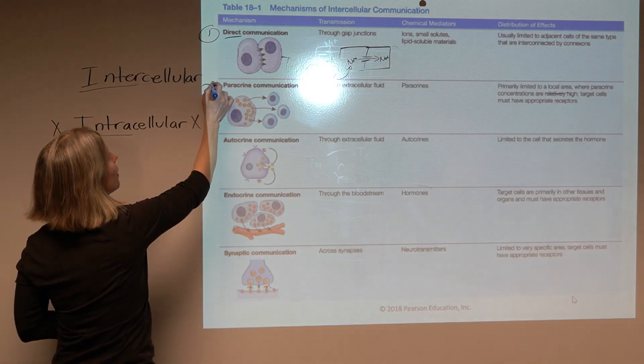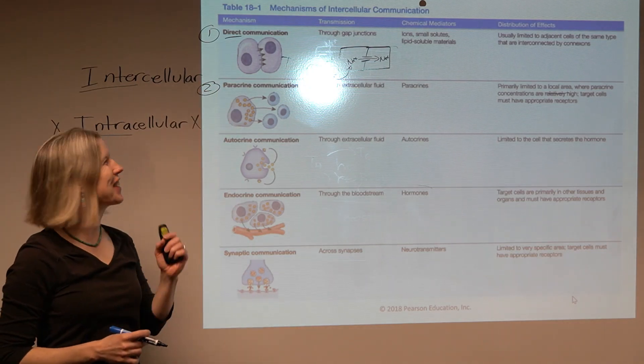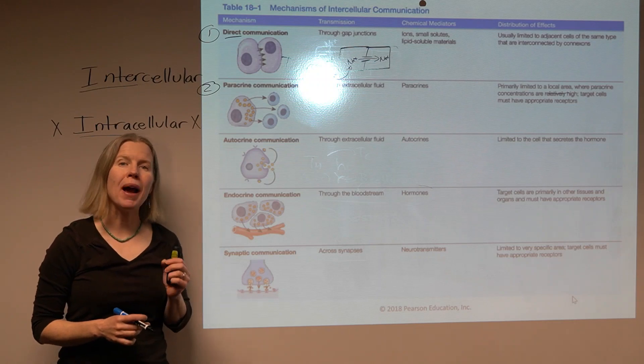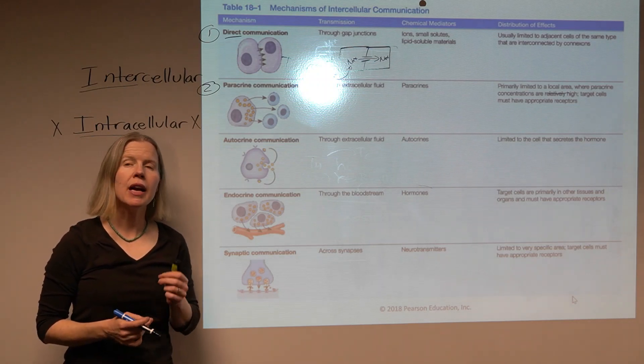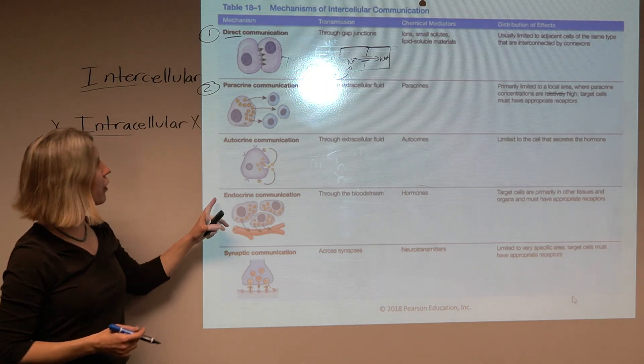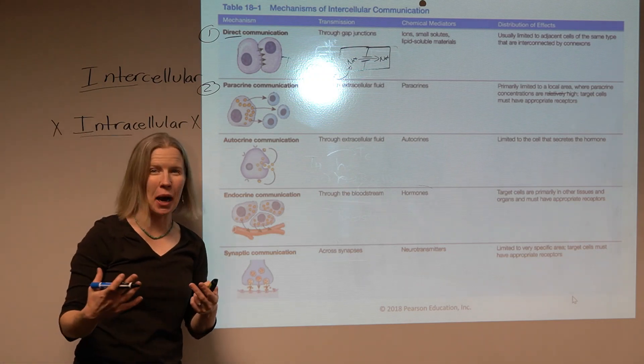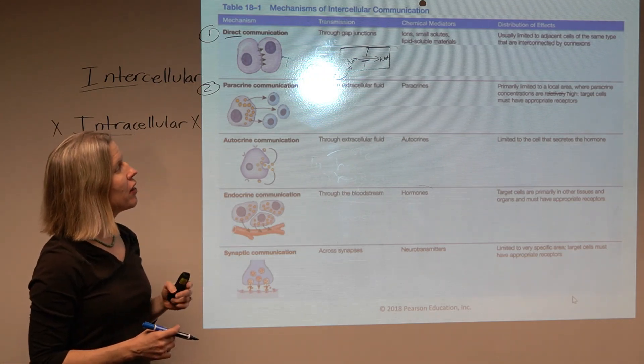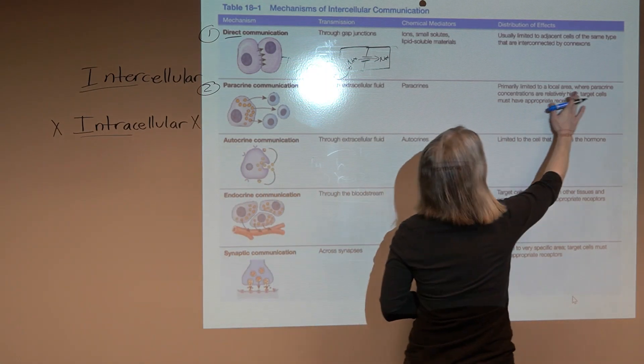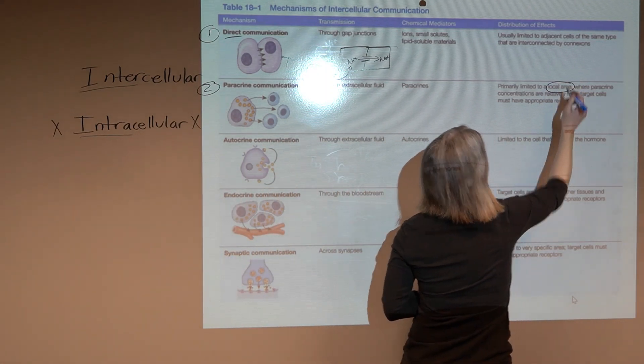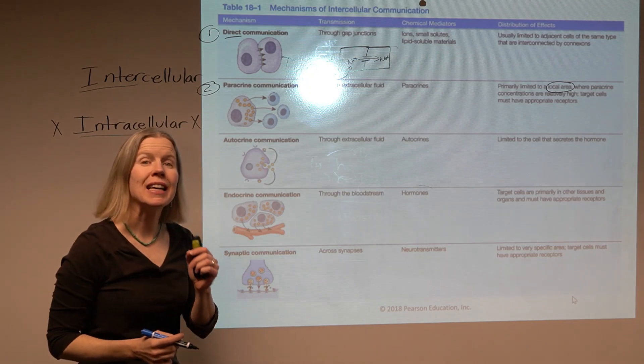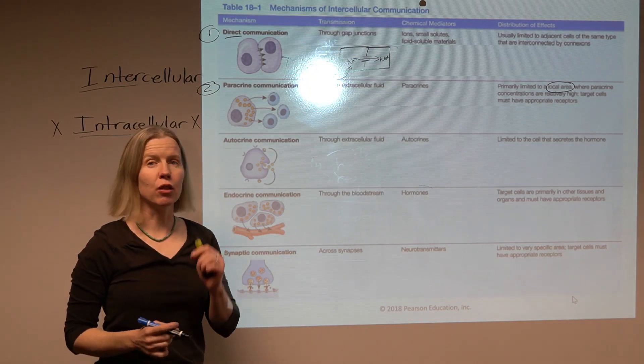Our next form of intercellular communication is called paracrine communication. Now this ends up sounding very similar to endocrine communication, the topic, the main topic of this chapter. The thing to keep in mind here, I think your key for paracrine communication is that it is extremely localized.